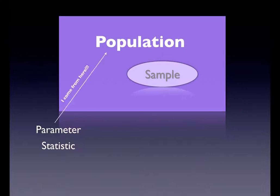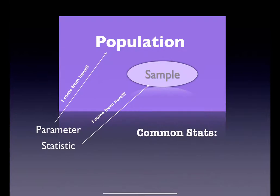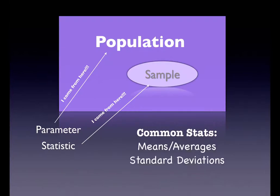From our population, we grab a sample. We have a couple more vocab terms: parameter and statistic. Parameters come from a population, statistics come from a sample. The P words go together and the S words go together. The most common stats we have are averages or means, standard deviations, and proportions.